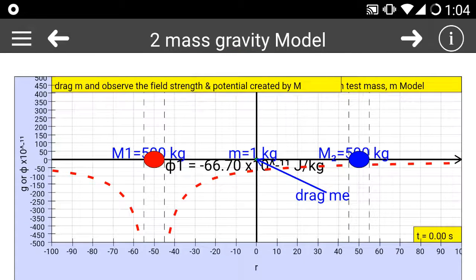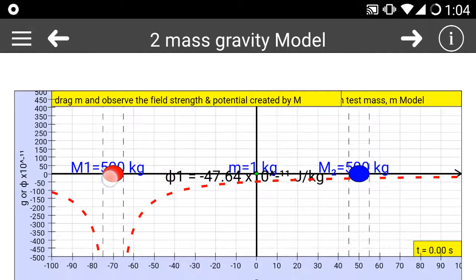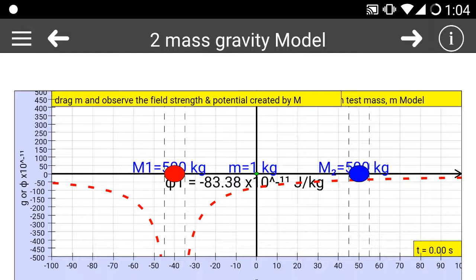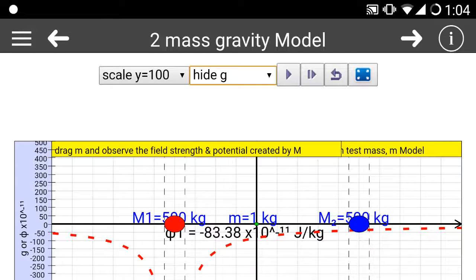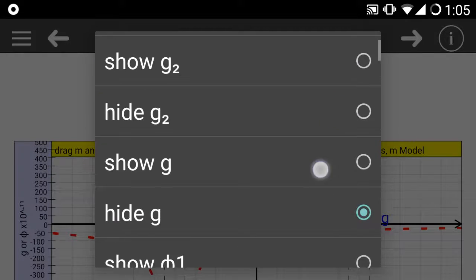Now you can see very nicely in the dotted red line the value of the plot of the gravitational potential due to M1, currently set at 500 kilograms, which you can change via the drop-down menu.